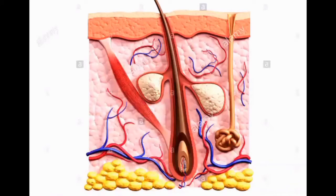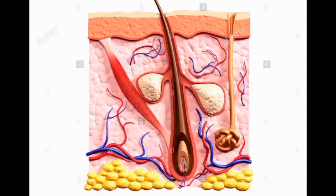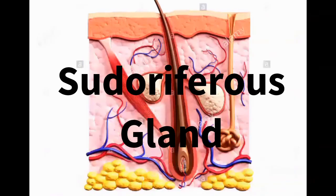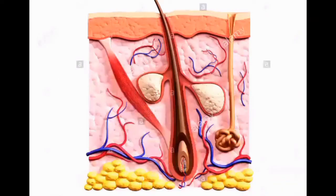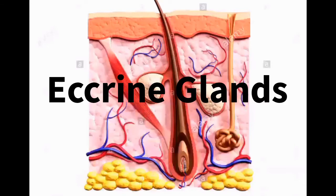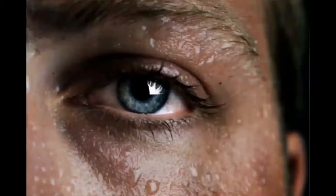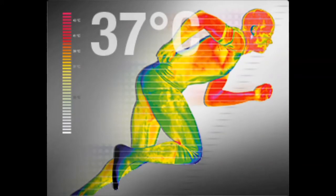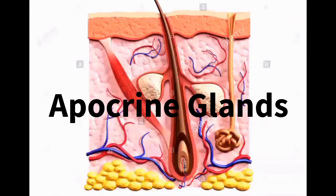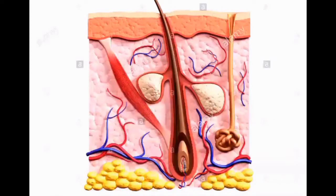The next accessory organ is this coiled ball here, which is called a sweat gland, or a sudoriferous gland. There are two types of sweat glands on your body: the eccrine sweat glands, which are found all over your body and produce a clear perspiration made primarily of water. Eccrine glands have an important role in maintaining your body temperature. The next group are called apocrine sweat glands, found in the armpit area and the genital area, and they secrete a cloudy substance made of proteins and lipids.